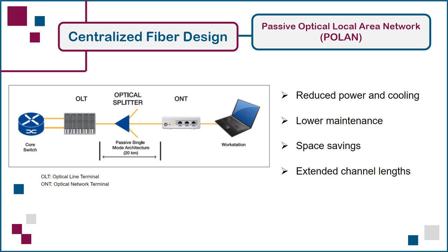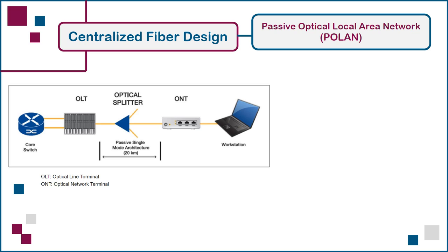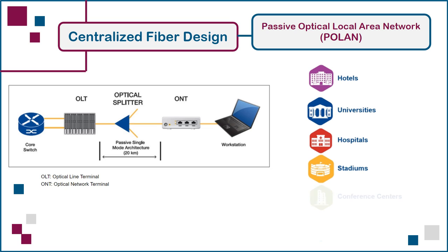The extended reach of single-mode fiber makes it possible to provide network services from a single distributor room to every device on a multi-building campus, over links that can be as long as 20 kilometers. This centralized grouping of network devices is inherently easier to physically secure than a collection of rooms on various floors, especially when dealing with high-rise buildings or multi-building campuses. POLAN architecture can be used to deliver network services in dedicated facilities, such as hotels, university campuses, hospitals, sports stadiums, and conference centers, in addition to commercial or office buildings. The common element is a large space with many network devices spread out over extended distances. These types of facilities are best suited to take advantage of single-mode fiber's reach and bandwidth capabilities.